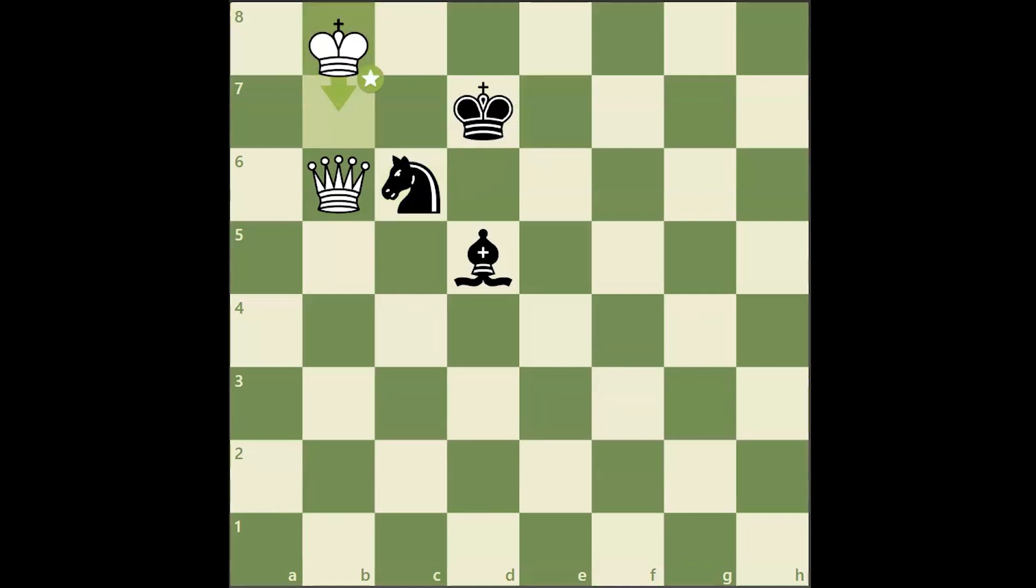The first step here is that white must force black's bishop to c4, then move the king back to a8 to escape the checks, after which with the help of the queen the white king will escape.